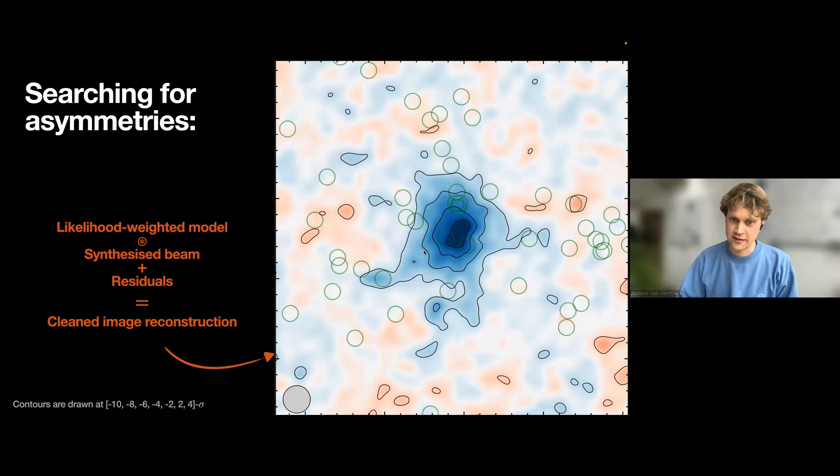We get a galaxy cluster here in the center, and then we have these asymmetries here in the south. Now, the question is—I also show cluster members here with the little circles—but the question is, are these asymmetric features here in the south real or not? The contours are drawn on minus two sigma. Are these like filamentary structures or an infalling group?